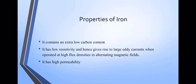Properties of iron: it contains extra low carbon content and has low resistivity, which gives rise to large eddy current when operated at high flux density in alternating magnetic field. The alternating magnetic field gives an EMF which produces a circulating current in the material, that current is the eddy current.